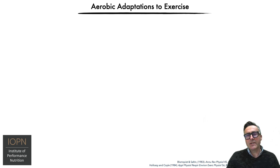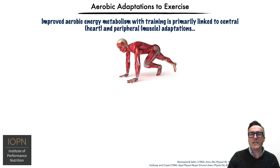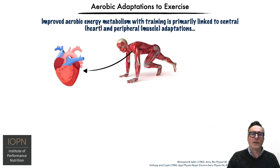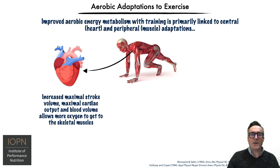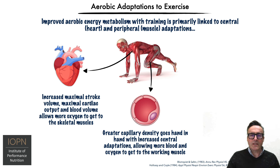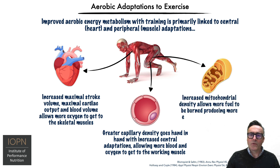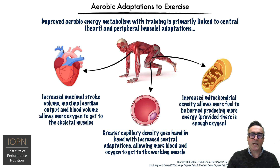So what about the aerobic adaptations to exercise? With interval training, improved aerobic energy metabolism is primarily linked to central — i.e. heart — and peripheral — i.e. muscle — adaptations. We see this as increased maximum stroke volume, maximal cardiac output, and blood volume, which allows more oxygen to get to the skeletal muscles. We also see greater capillary density, effectively allowing more blood and oxygen to get to the working muscles, as well as increased mitochondrial density, which allows more fuel to be burned, producing more energy, provided there is enough oxygen.